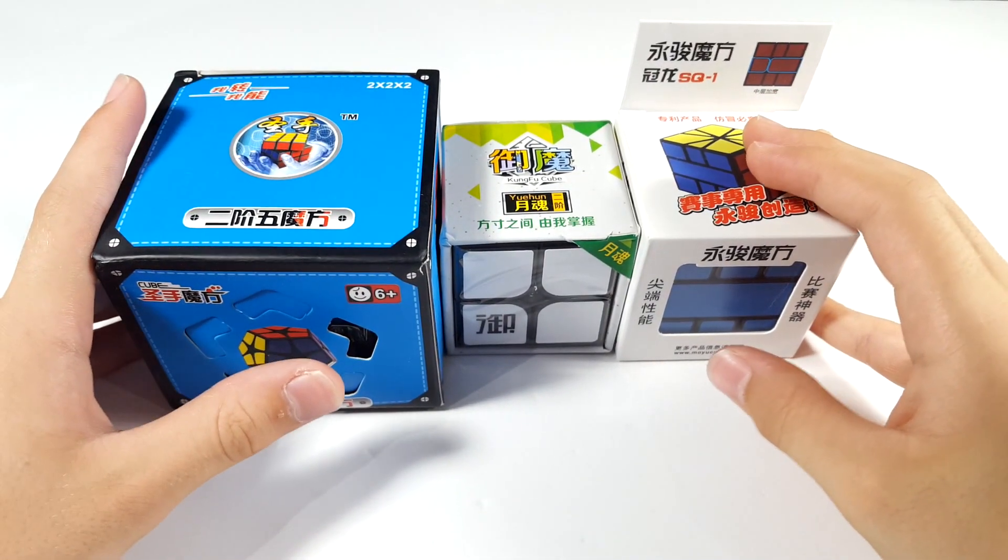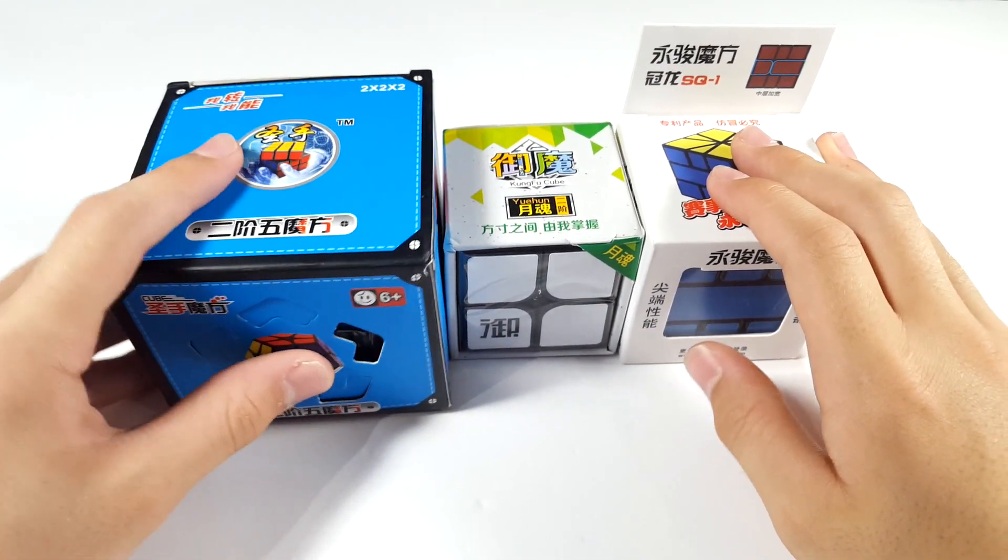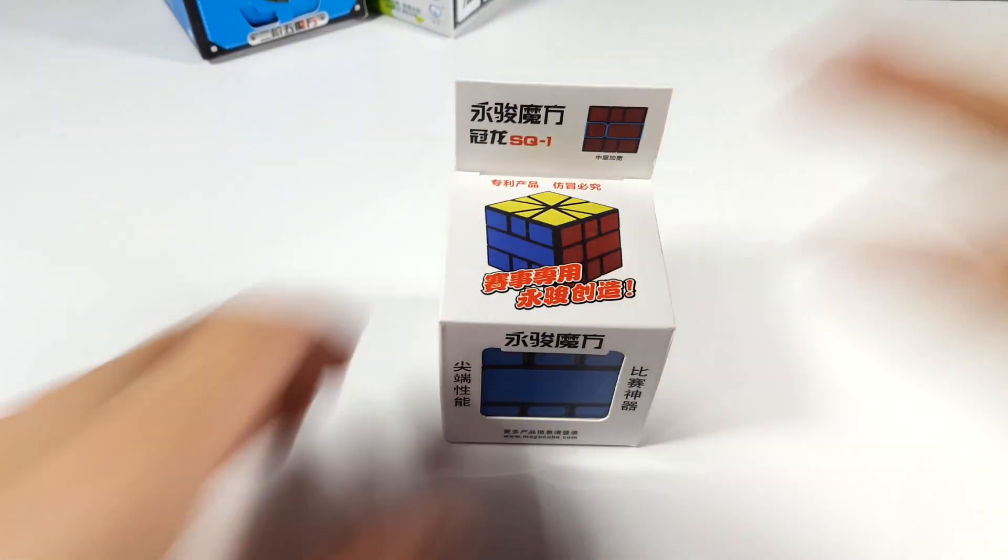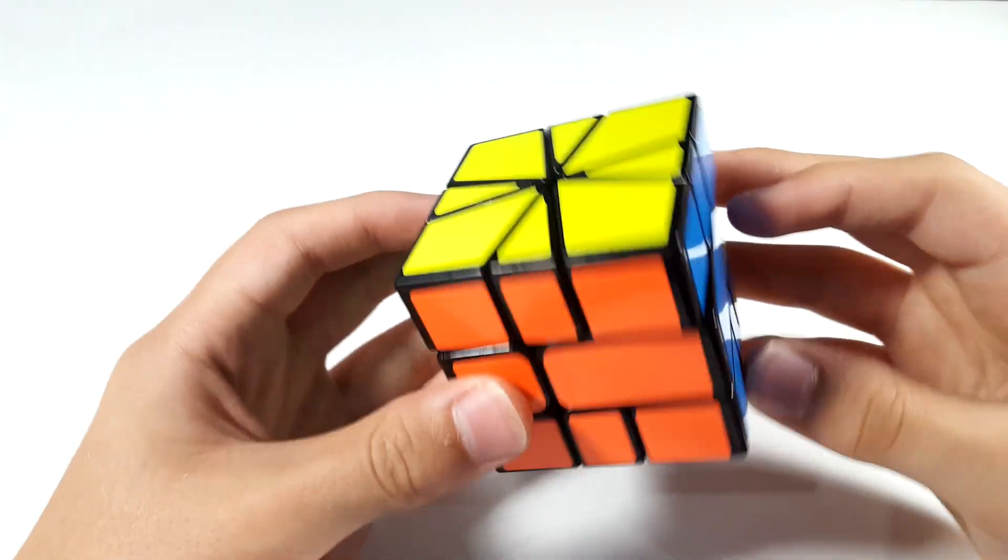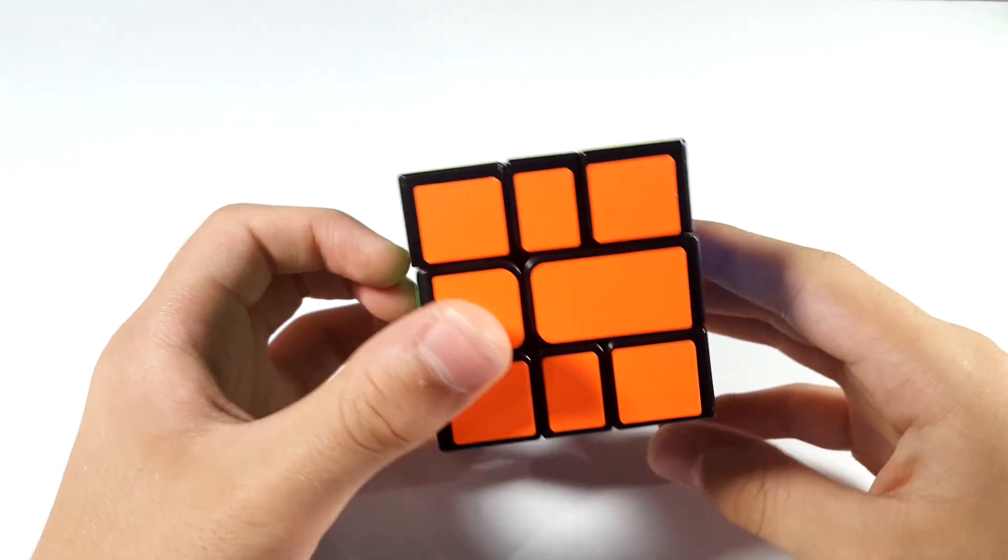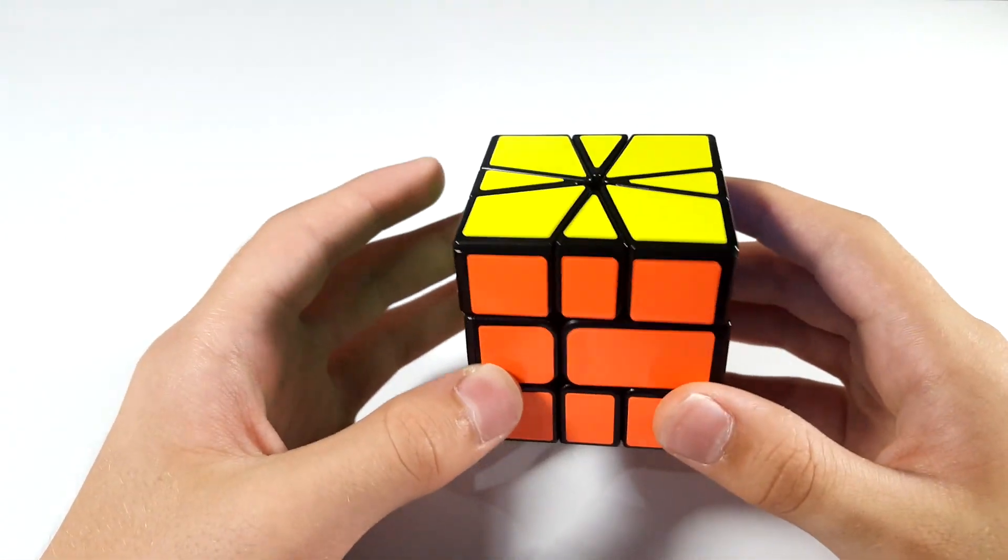Alright, so I'm going to be unboxing these from least exciting to most exciting, so let's get into the Square One. Here is the YJ Guanlong Square One. I just messed up the part where I took it out of the box, but that really doesn't matter.